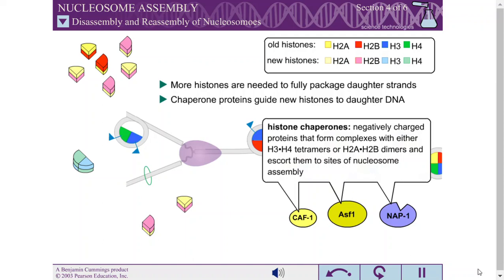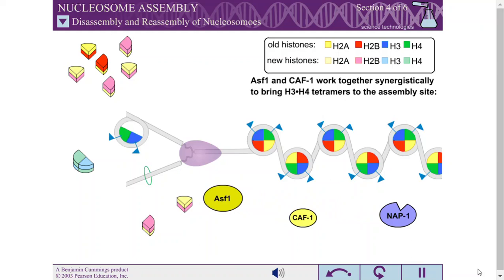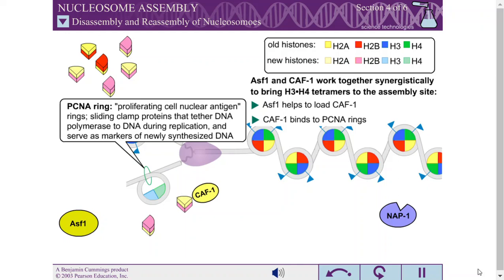ASF1 and CAF1 work together synergistically to bring H3-H4 tetramers to the nucleosome assembly site. It is believed that ASF1 helps to load CAF1 with new tetramers. CAF1 binds to PCNA rings, delivering the tetramers to the DNA. PCNA stands for proliferating cell nuclear antigen, and this sliding clamp protein helps to tether DNA polymerase to DNA during replication. The PCNA rings are left on the DNA by the passing replication machinery, and therefore serve as markers of newly synthesized DNA.